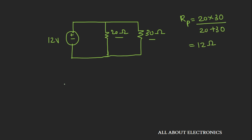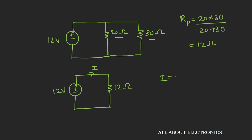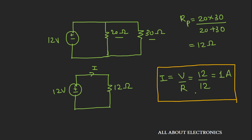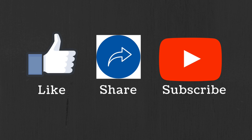The circuit now has a 12-volt voltage source connected to a 12-ohm equivalent resistance. Using Ohm's law, the current I equals V/R = 12/12 = 1 ampere. So using the star-to-delta conversion we can easily solve circuit problems. I hope you understood how to convert a star network into the delta network. If you have any suggestions, let me know in the comments. If you liked this video, hit the like button and subscribe to the channel for more such videos.